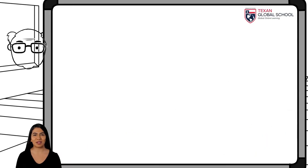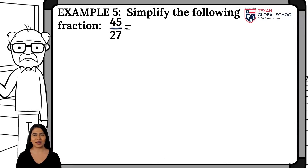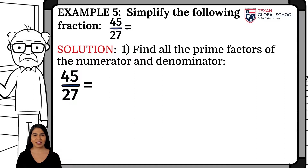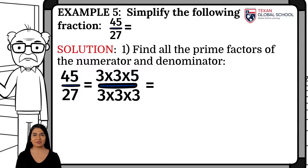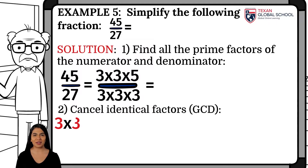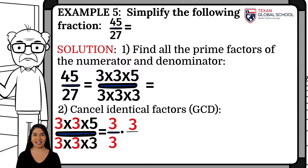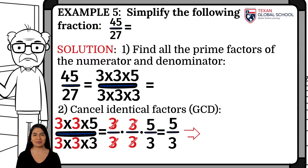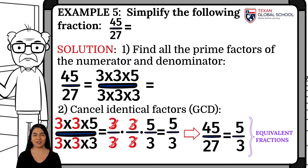In this last example, we will simplify the fraction 45 over 27. First, we find the prime factors of the numerator and denominator. The prime factors of 45 are 3, 3, and 5. The prime factors of 27 are 3, 3, and 3. We cancel identical factors — in this case, 3 and 3. The greatest common divisor of 45 and 27 is 9, since 3 times 3 is 9. Canceling that factor gives a simplified equivalent fraction. We conclude that 45 over 27 is equal to 5 thirds.